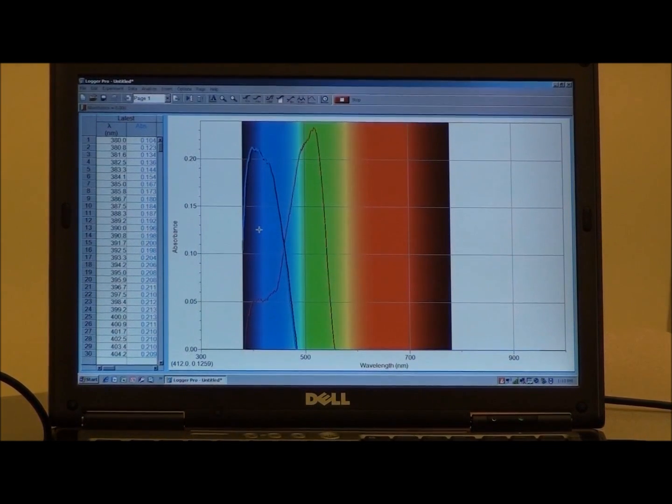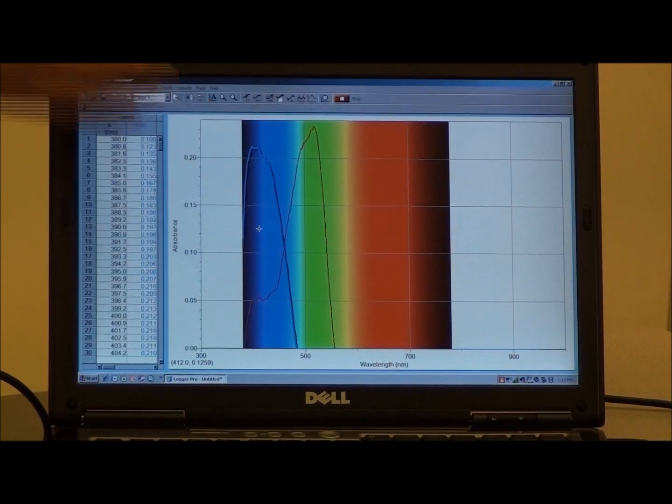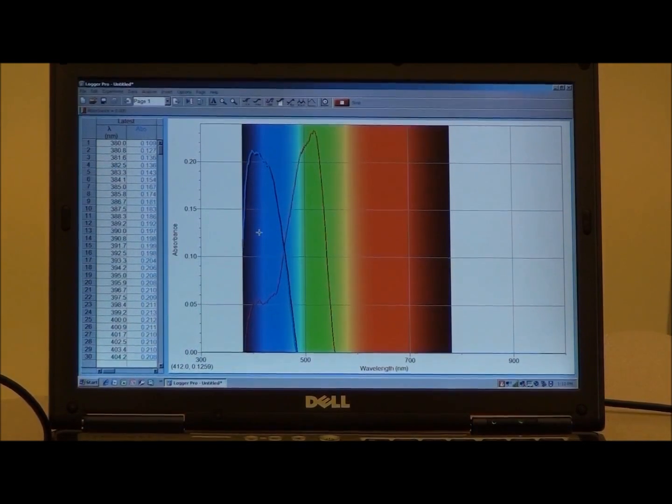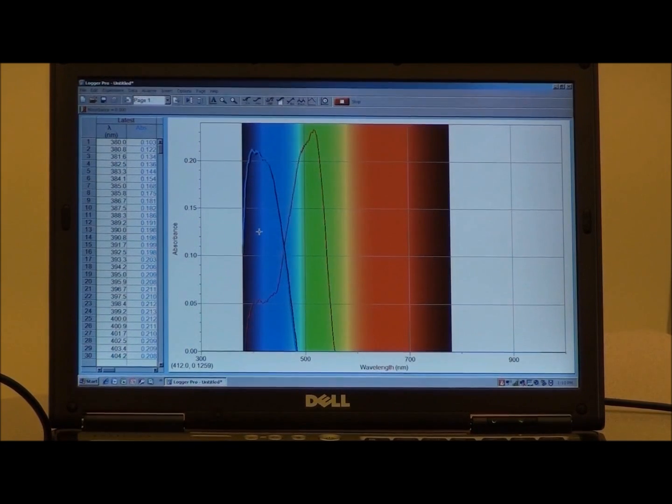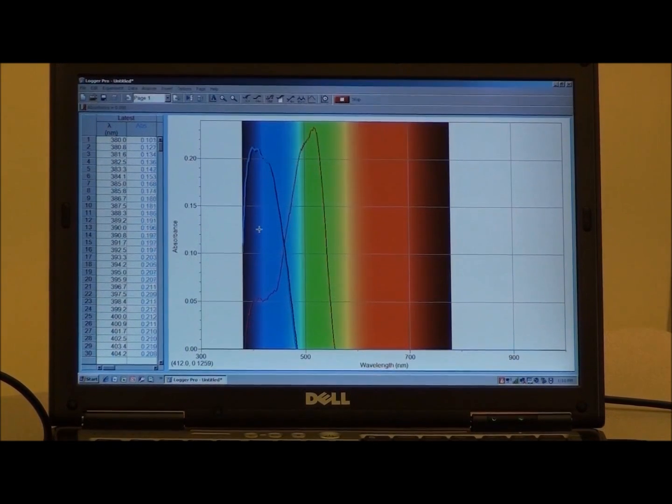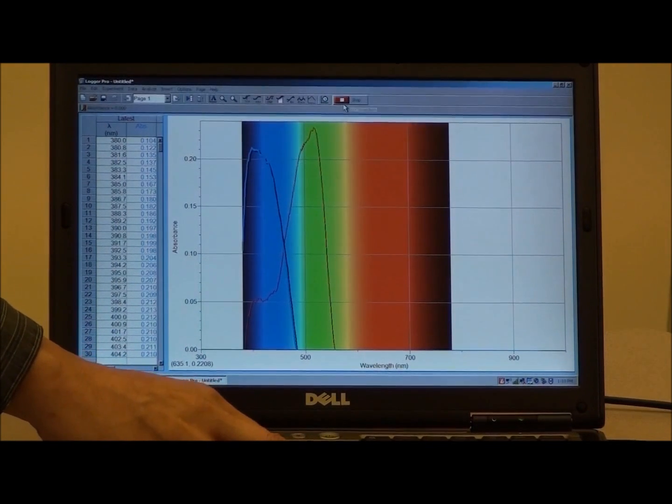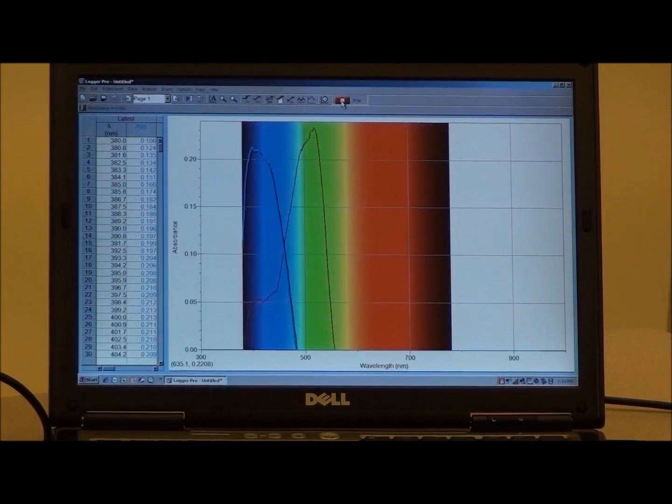The next solution that will be placed into the spectrophotometer is a yellow solution. Notice that the yellow solution strongly absorbs in the blue and violet regions of the electromagnetic spectrum. Once again, we will stop the data collection and keep that data displayed.